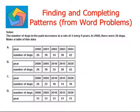The first one says the number of dogs in the park increases at the rate of four every five years. In 2000, there were 26 dogs. Make a table of this data.